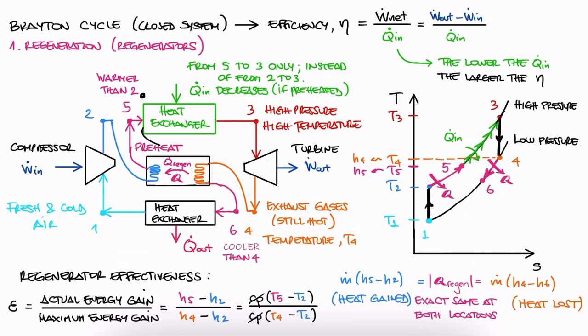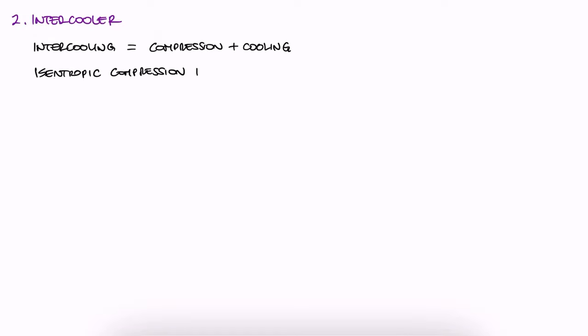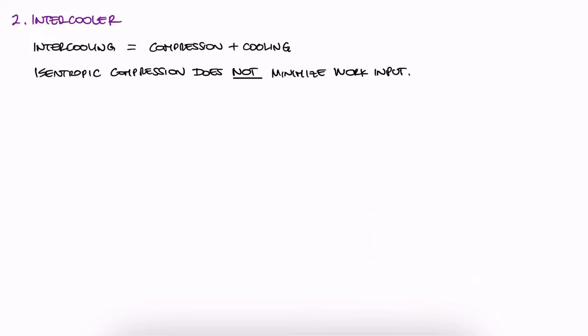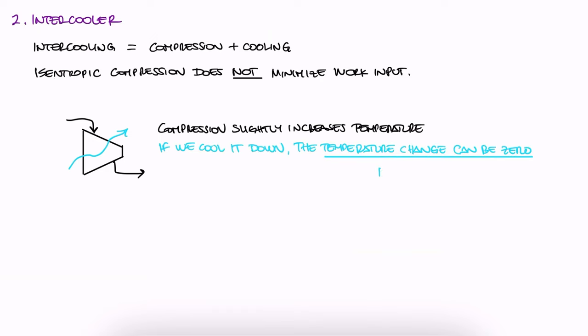The second device that can help make this cycle more efficient is an intercooler. Intercooling is the process of combining compression with cooling. When we first studied isentropic processes, we pointed out that isentropic processes will not minimize the work input. During the reversible processes 12 minute lecture, link below, we talked about how the most efficient type of heat transfer is isothermal heat transfer, and it's just the same idea here. We can remove heat while compressing to have an isothermal process.